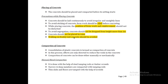Consolidation of plastic concrete is known as compaction of concrete. In this process, efforts are directed to reduce voids, meaning air bubbles are removed. Air entrainment is not done during this process. Compaction can be done manually or mechanically. Manual compaction is done with steel tamping rods. Narrow and deep members are compacted with tamping rods, while thin slabs and floors are tamped with the help of screeds.